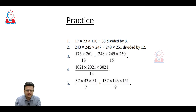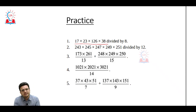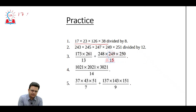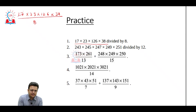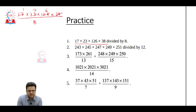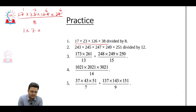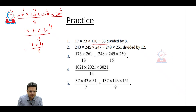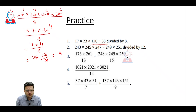Now try to do some practice. Consider this question — I suggest stop the video first, get the answer, then verify. First number: 17 × 23 × 126 × 38 divided by 8. First remainder is 1, second remainder is 7, third remainder is 6, fourth remainder is 6. Then 1 × 7 × 6 × 6 = 252. Dividing 252 by 8 — 7 fours are 28 — remainder will be 4.